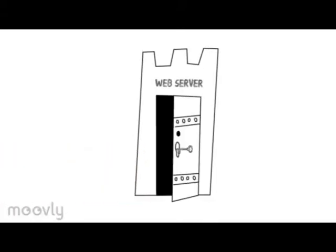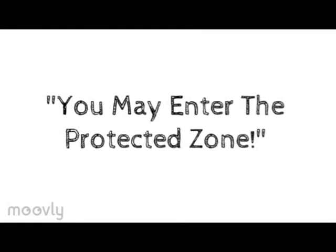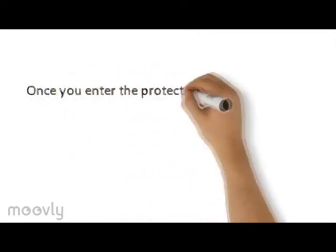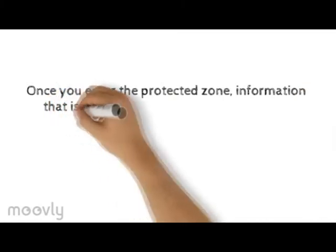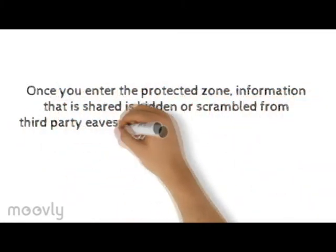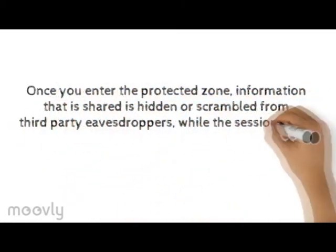Step 5. The server then decrypts the session key using a private key, and sends back an acceptance of session key to start an encrypted session. This encrypted session is a protected area where information is more or less hidden or scrambled from third-party eavesdroppers.